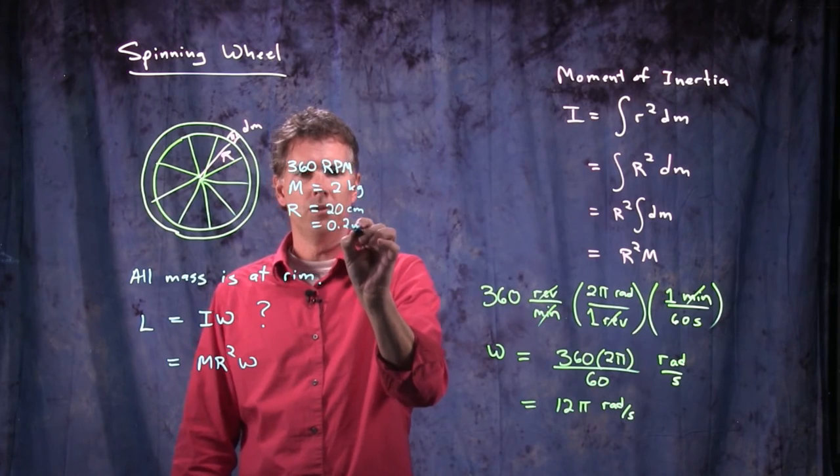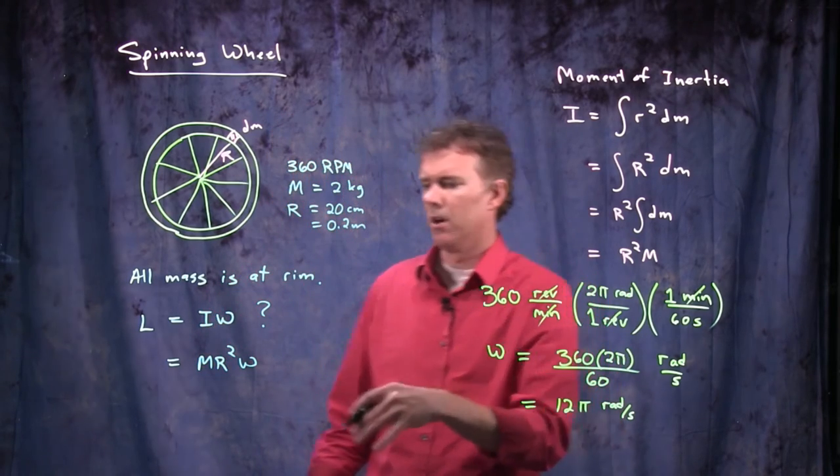20 centimeters is, of course, 0.2 meters. So let's punch in all these numbers and we'll see what we get.